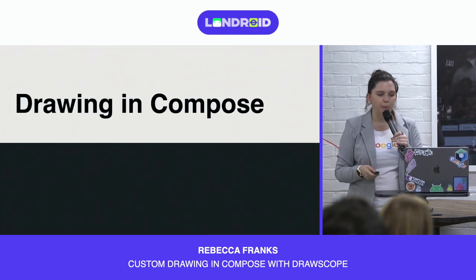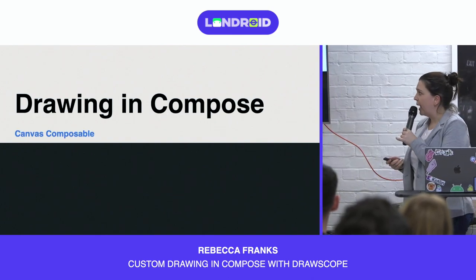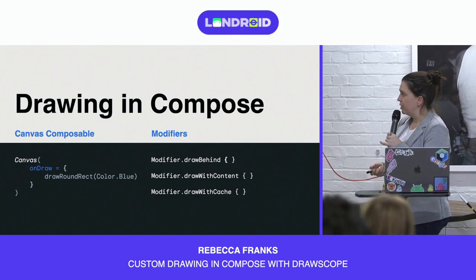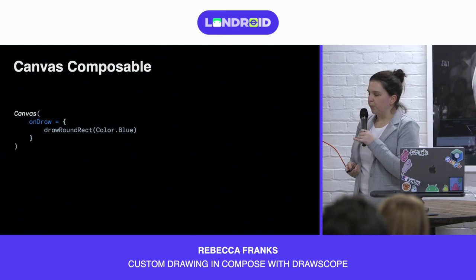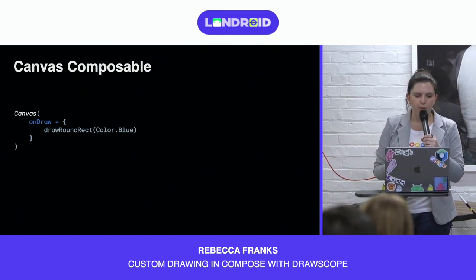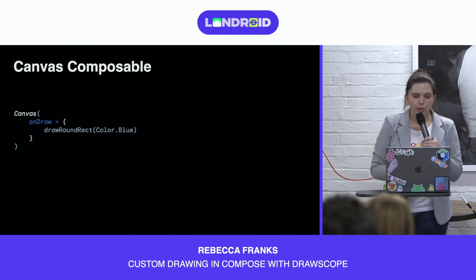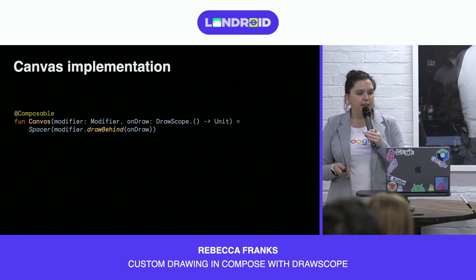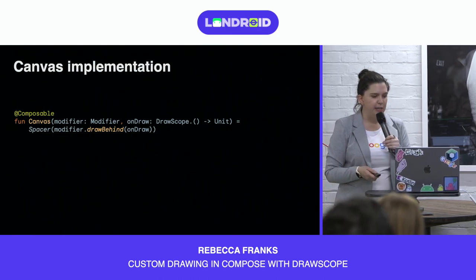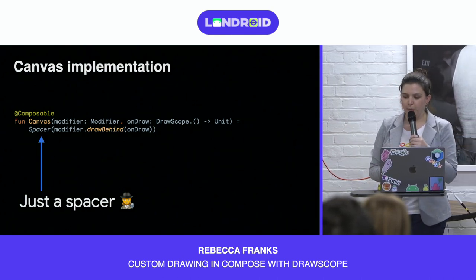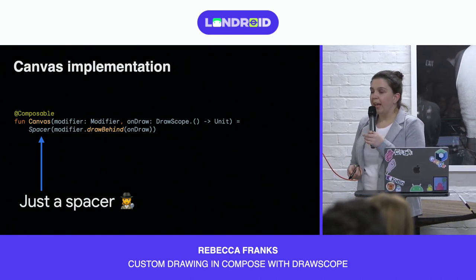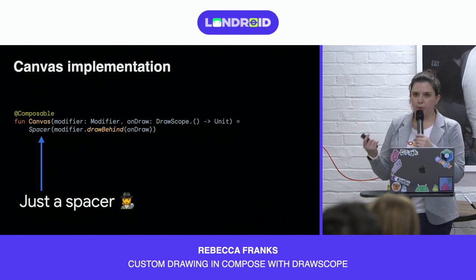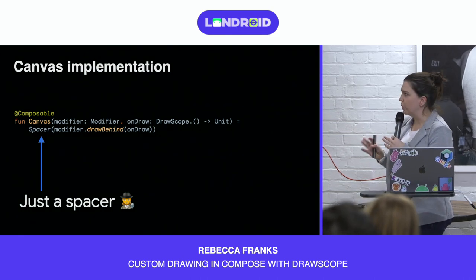To draw something custom in Compose, we have a few different options. We can either use a Canvas composable, or there are three different modifiers we can use: drawBehind, drawWithContent, or drawWithCache. Taking a quick look under the hood of how the Canvas composable is implemented, we can see it's just a Spacer in disguise using modifier.drawBehind, wrapped in a conveniently named composable called Canvas. So we can just focus on these three modifiers instead.